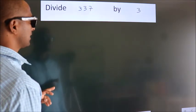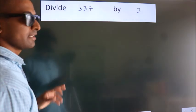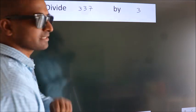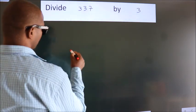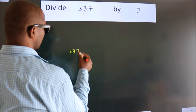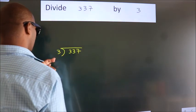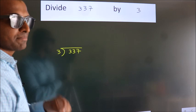Divide 337 by 3. To do this division, we should frame it in this way: 337 here, 3 here. This is your step 1.